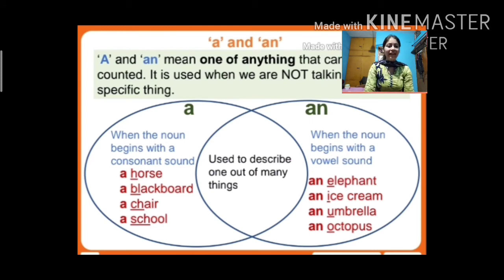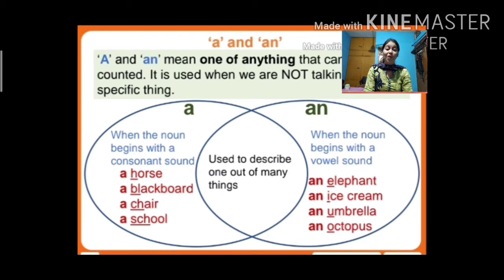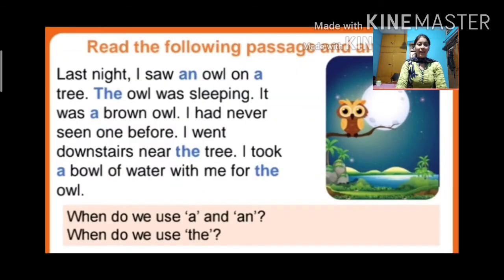We use 'an' when the noun begins with a vowel sound. For example: an elephant — when we say 'elephant,' we hear a vowel sound, so we write 'an.' Similarly, 'an ice cream' — because 'ice' starts with a vowel sound. Remember: consonant sound = 'a'; vowel sound = 'an.'